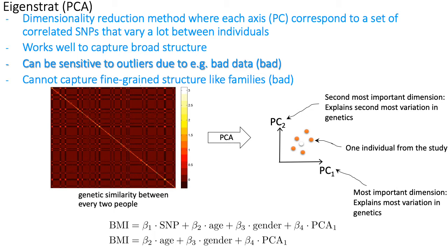PCA is a method that takes as input your genetic similarity matrix from the previous slide and spits out a set of coordinates where each individual is described by a value in PC1, PC2, and so on.